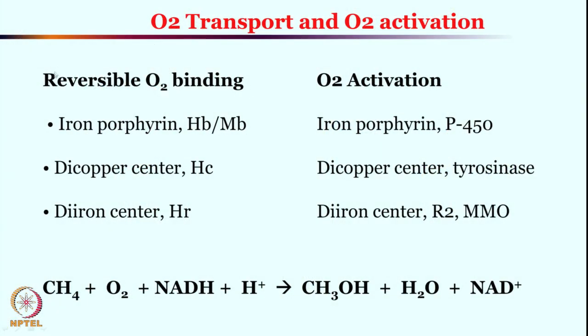To keep perspective: previously we saw oxygen transport and activation with iron porphyrin — hemoglobin and myoglobin are responsible for reversible oxygen binding. But utilizing the same iron porphyrin unit with cytochrome P450, we saw substrate activation as well as oxygenation chemistry. So seemingly similar active sites can do completely two different jobs.